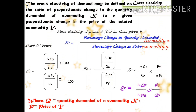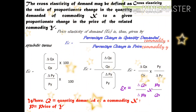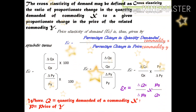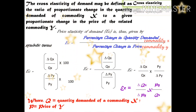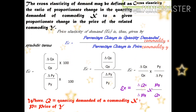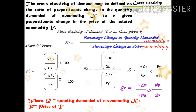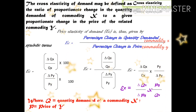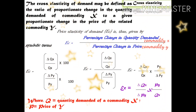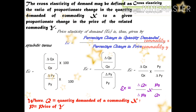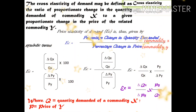Cross elasticity of demand: we have price elasticity of demand involving price and quantity, and income elasticity. We also have cross price elasticity of demand involving two commodities. The cross elasticity of demand may be defined as the ratio of the proportionate change in the quantity demanded of commodity X to a given proportionate change in the price of related commodity Y. We compare commodity X quantity and commodity Y price.